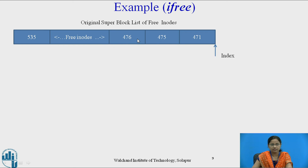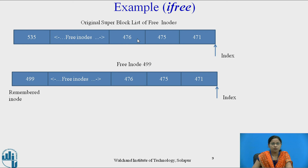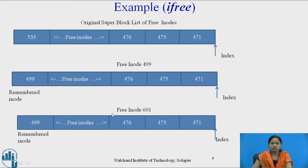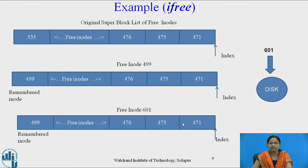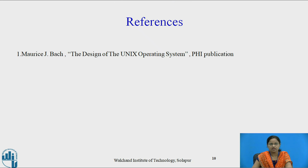Let us see an example of the iFree algorithm. This is the original super block list of free iNodes. Suppose a process frees iNode number 499. Since the super block list is full, 499 is compared with the remembered iNode 535. As 499 is less than 535, it is placed in the position of remembered iNode 535. Now suppose a process frees iNode number 601. This 601 is compared with the new remembered iNode 499. As 601 is greater than 499, it is not placed on the super block list — instead, it is placed on disk.